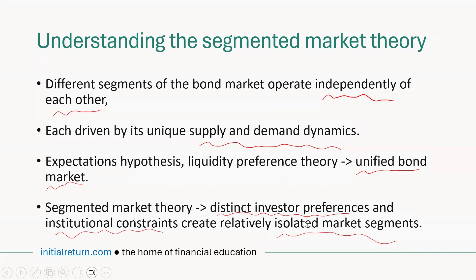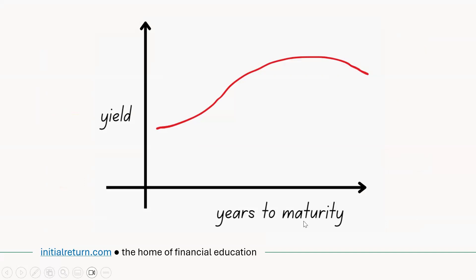Let me explain this with a more practical example. Here we have a hump-shaped yield curve, with bond yields on the vertical axis and maturity — the term of the interest rates — on the horizontal axis. Segmented market theory says we can split this yield curve into different segments: short-term bonds on the left, long-term on the right-hand side, and medium-term in the middle.